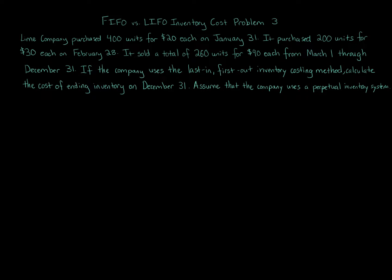FIFO vs LIFO inventory cost problem 3. Lime Company purchased 400 units for $20 each on January 31st. It purchased 200 units for $30 each on February 28th. It sold a total of 260 units for $90 each from March 1st through December 31st. If the company uses the last in first out inventory costing method, calculate the cost of ending inventory on December 31st, assuming the company uses a perpetual inventory system.